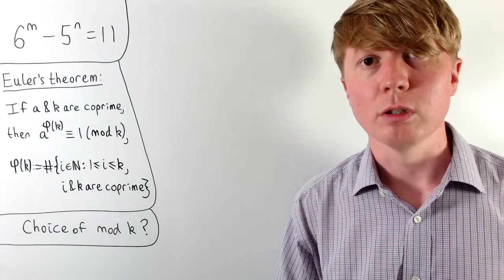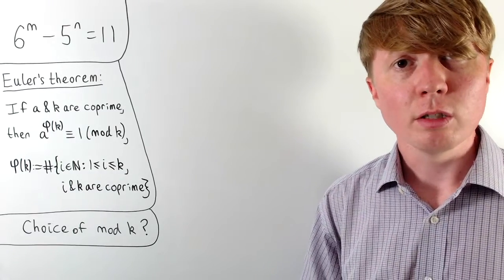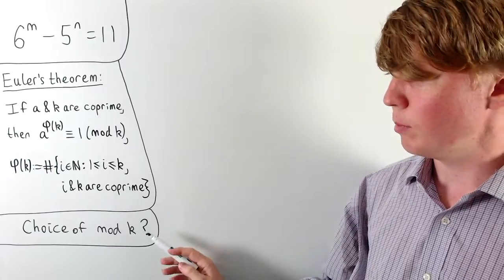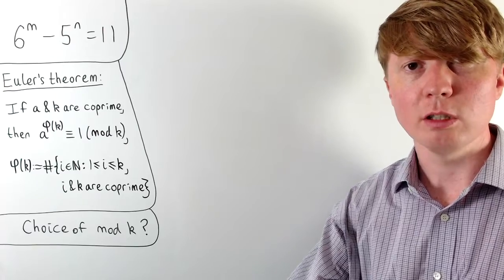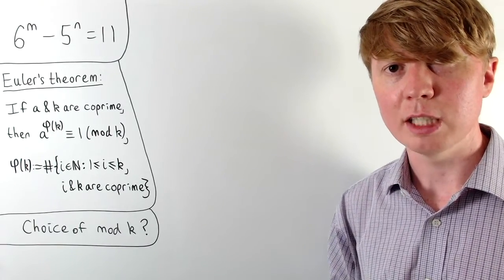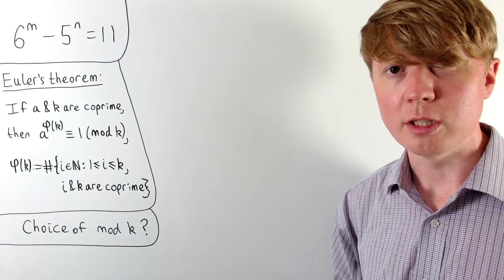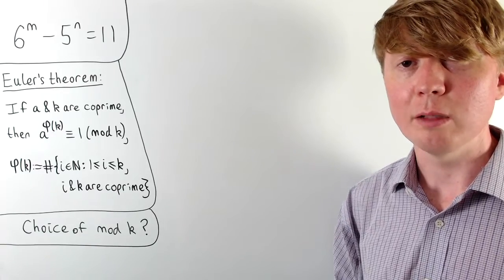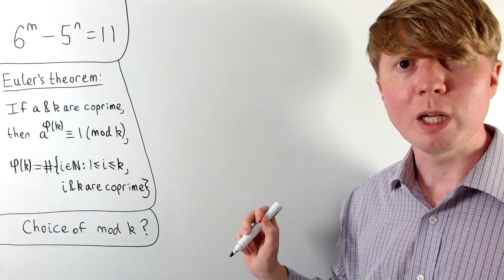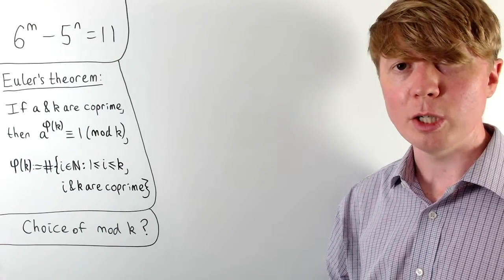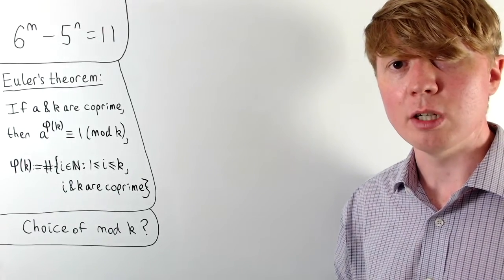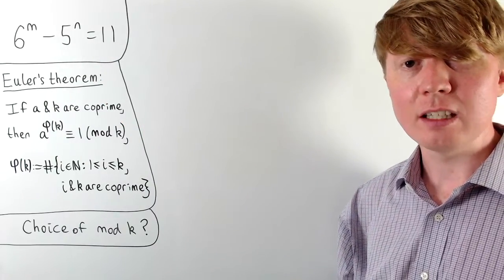Now let's explore why we chose 24. There isn't a definitive precise approach that will always yield a useful value of k, but there are tips that help us make sensible guesses. With 5 and 6 modulo 24, this was particularly nice because powers of 5 could only take two possible values mod 24, and powers of 6 eventually only took one possible value. We want a k so that both 5 to the n and 6 to the m take only a handful of values modulo k.